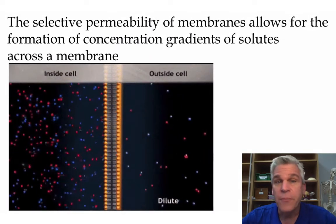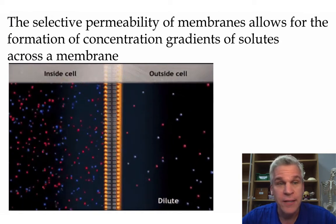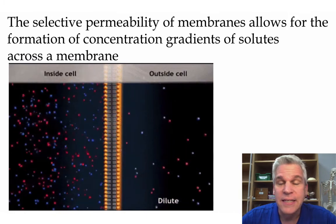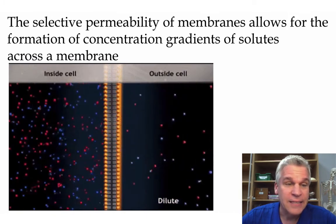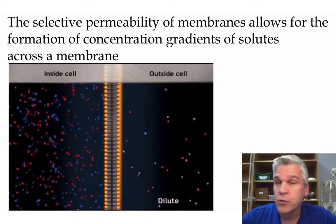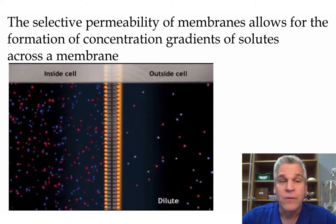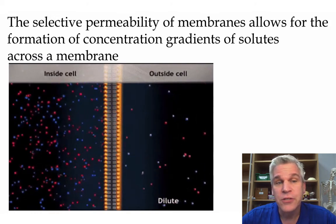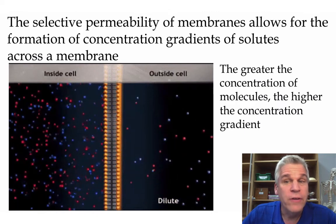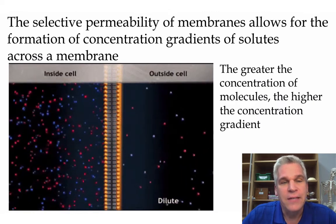The selective permeability of membranes allows for the formation of concentration gradients of solutes across a membrane. Here we can see in this example where inside the cell there are more solute molecules compared to outside the cell, which means we're going to have a greater concentration gradient inside the cell compared to outside. The greater the concentration of molecules, the higher the concentration gradient.